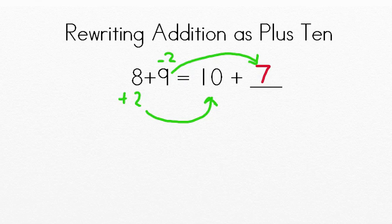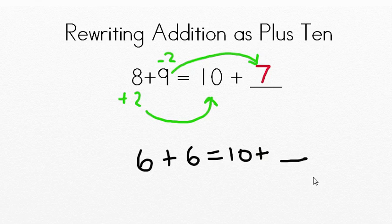So for instance, if we had this number, 6 plus 6 equals 10 plus blank. Well, if we know the rule that we have to add something to make 10, 6 plus what equals 10? That's right, 4. So 6 plus 4 makes that 10 right there.